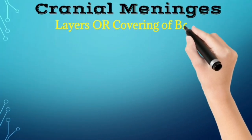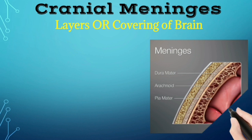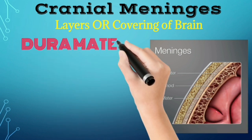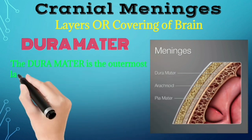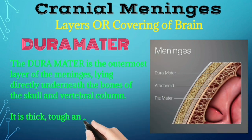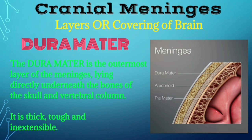The last and outermost layer is called dura mater. Dura mater is the outermost layer of the meninges lying directly underneath the bones of the skull and vertebral column. It is thick, tough and inextensible.